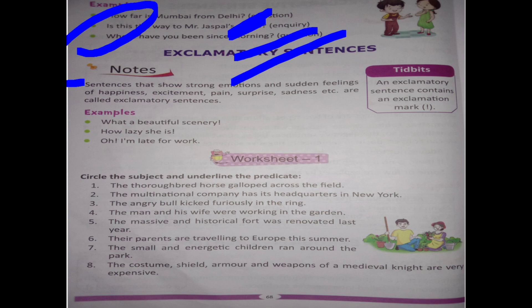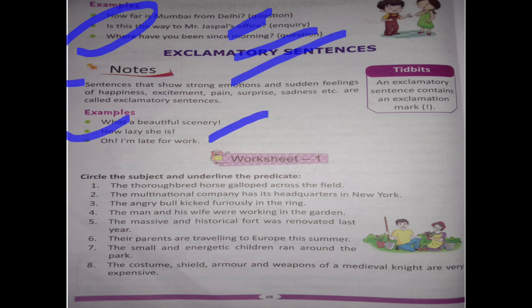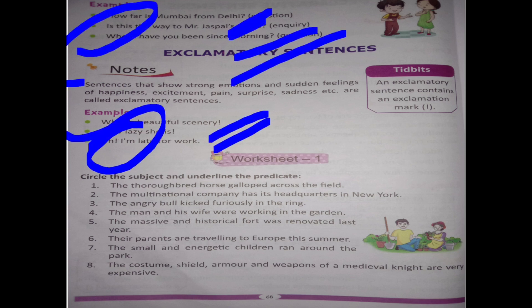Exclamatory sentences show strong emotions — sudden feelings of happiness, excitement, pain, surprise, sadness, etc. An exclamatory sentence contains an exclamation mark. For example: 'What a beautiful scenery!' — exclamation mark. 'How lazy she is!' — exclamation mark. 'Oh, I'm late for work!' — exclamation mark is used.